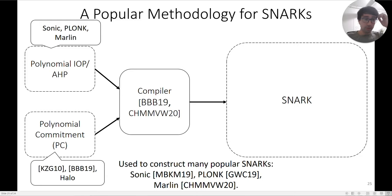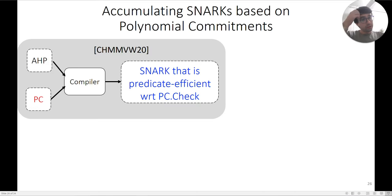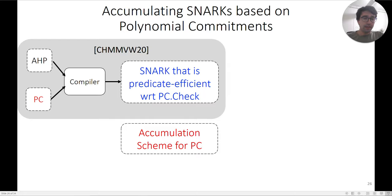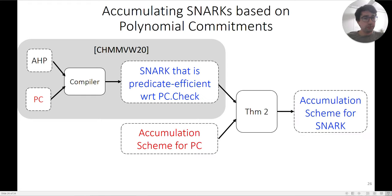This methodology is used to construct many popular and widely-used SNARKs. Whenever you build a SNARK with this framework, what you end up with is a SNARK that is predicate-efficient with respect to the verification predicate of the polynomial commitment scheme. This means what you need to do is just design an accumulation scheme for the verification predicate of the PC scheme, and combine these using Theorem 2 to obtain an accumulation scheme for the SNARK as a whole.